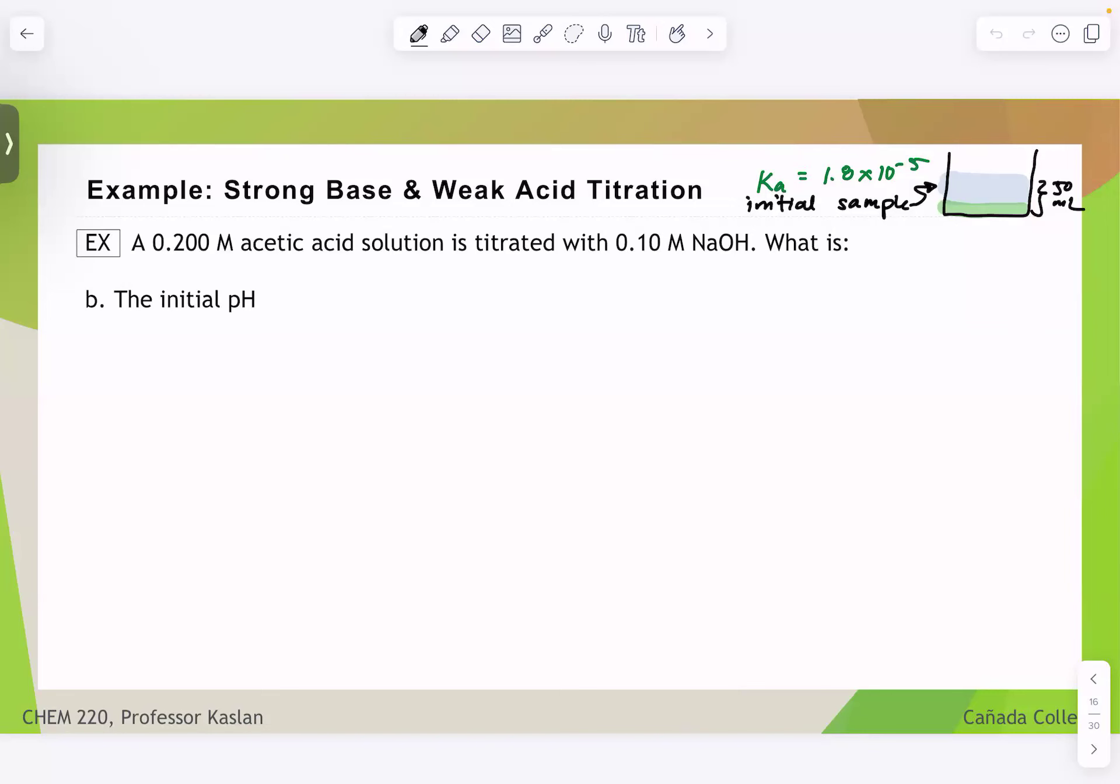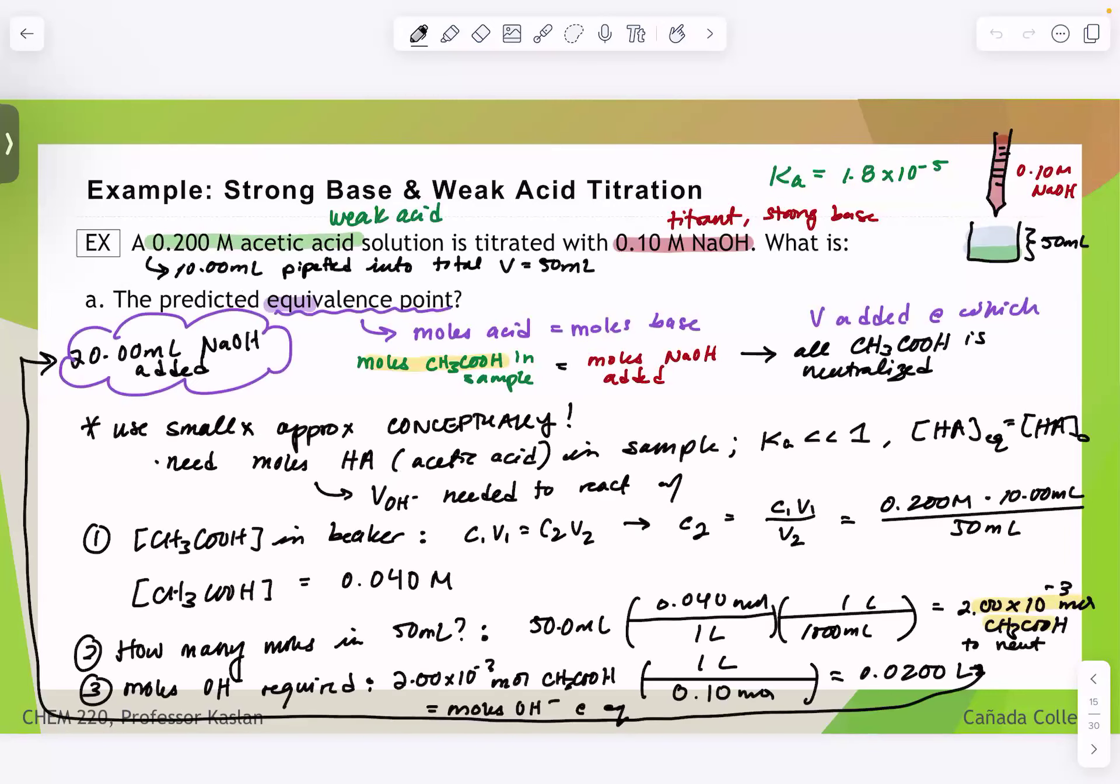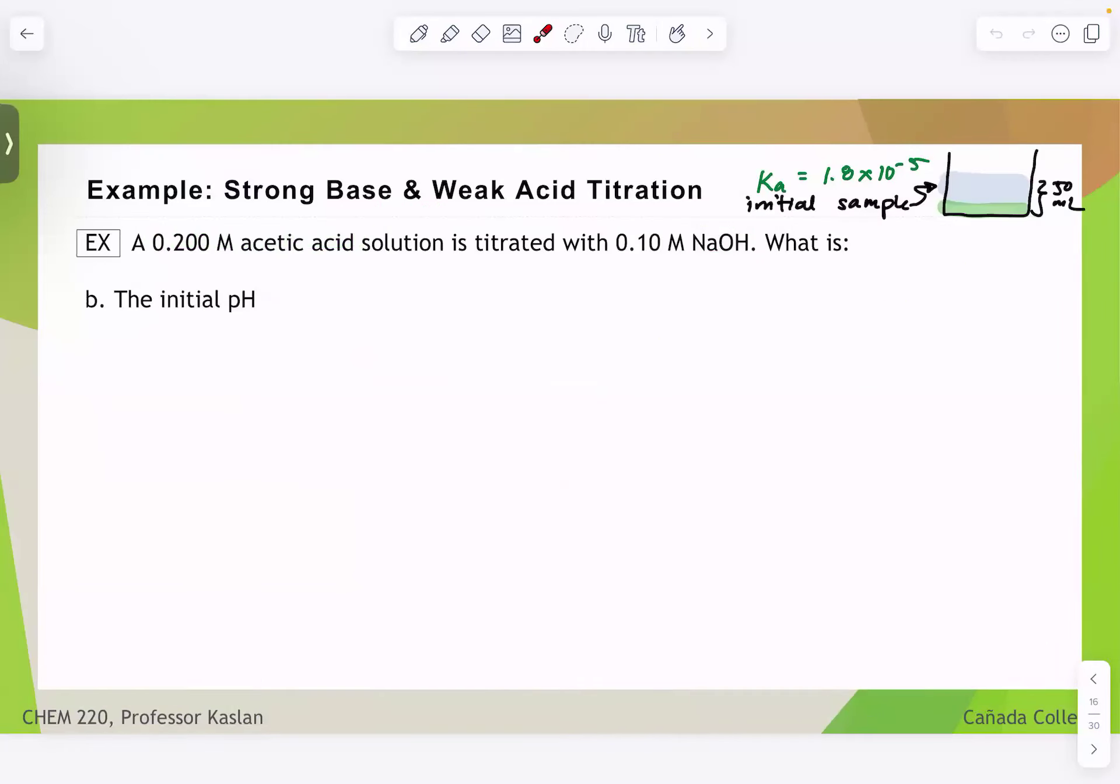In our last part of this question, we were tasked with determining the predicted or theoretical equivalence point, meaning what volume of sodium hydroxide would need to be added so that all of our moles of acetic acid in the sample would be neutralized by that same equal amount of moles. And now in this part of the problem, we are being asked to determine the initial pH of the acetic acid or of the sample.